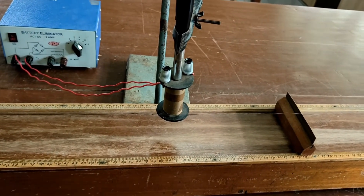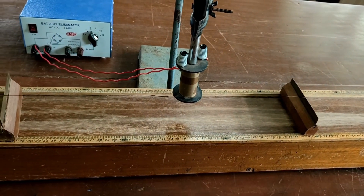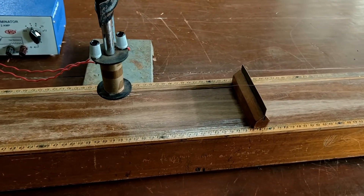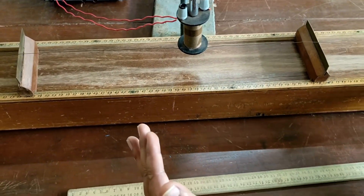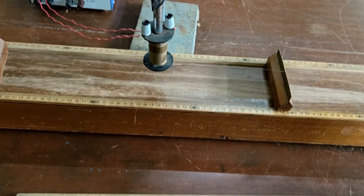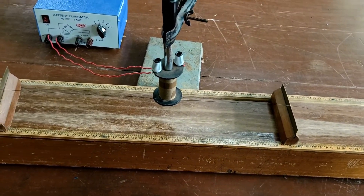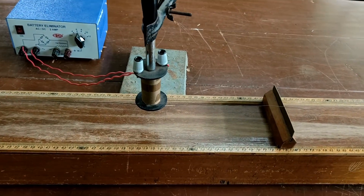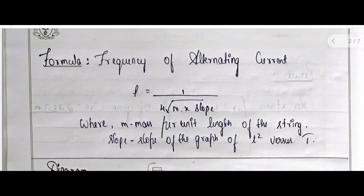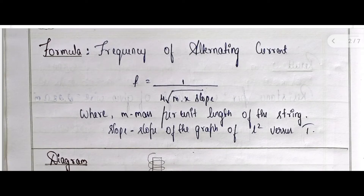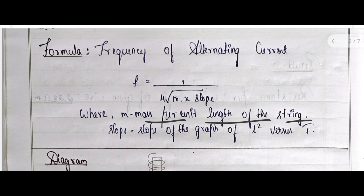In the same way we have to increase the mass again and again by putting slots of half kg. As the weight goes on increasing, the resonating length will also increase. After that you have to take the square of the length, then plot the graph. Here is the formula: frequency of AC, f = 1/4 × √(m × slope), where small m is the mass per unit length of the wire or string, and slope is obtained from the graph.